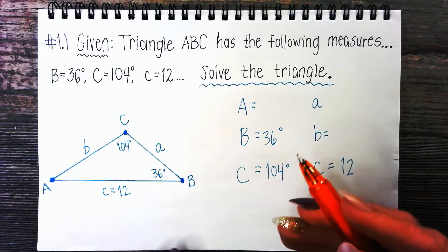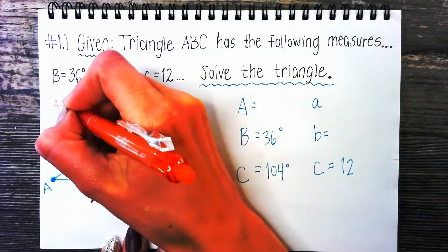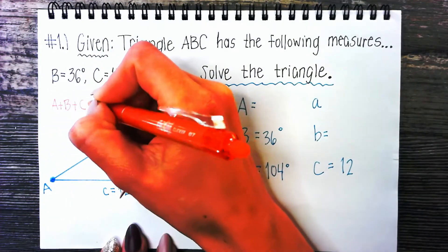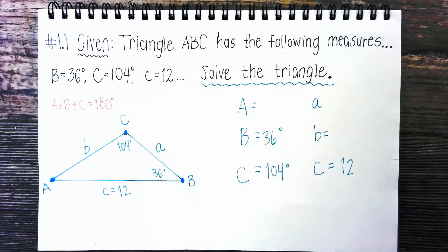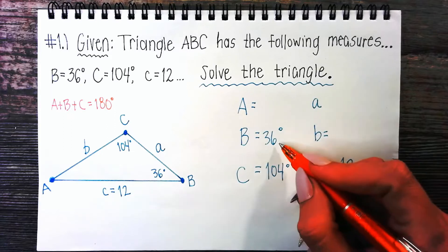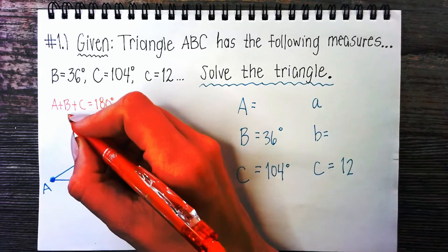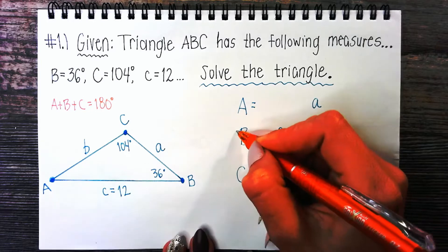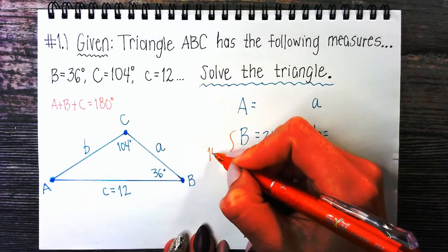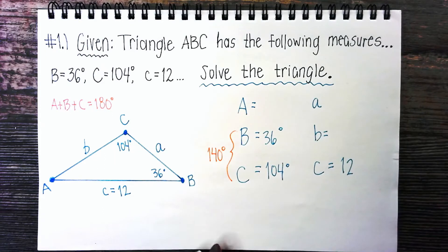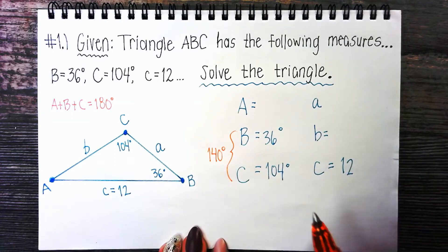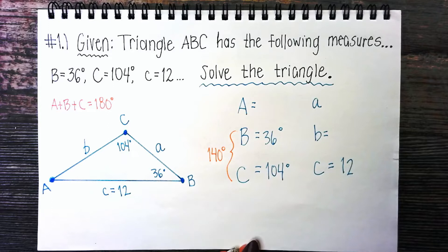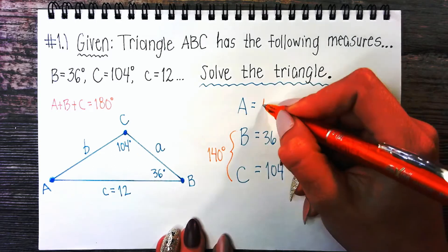The first piece of advice from the lesson video was to always find the third angle when you're given two of the three angles. You find the third angle using the fact that all three angles add up to 180 degrees. 36 plus 104 equals 140, so angle A has to be 40 degrees.